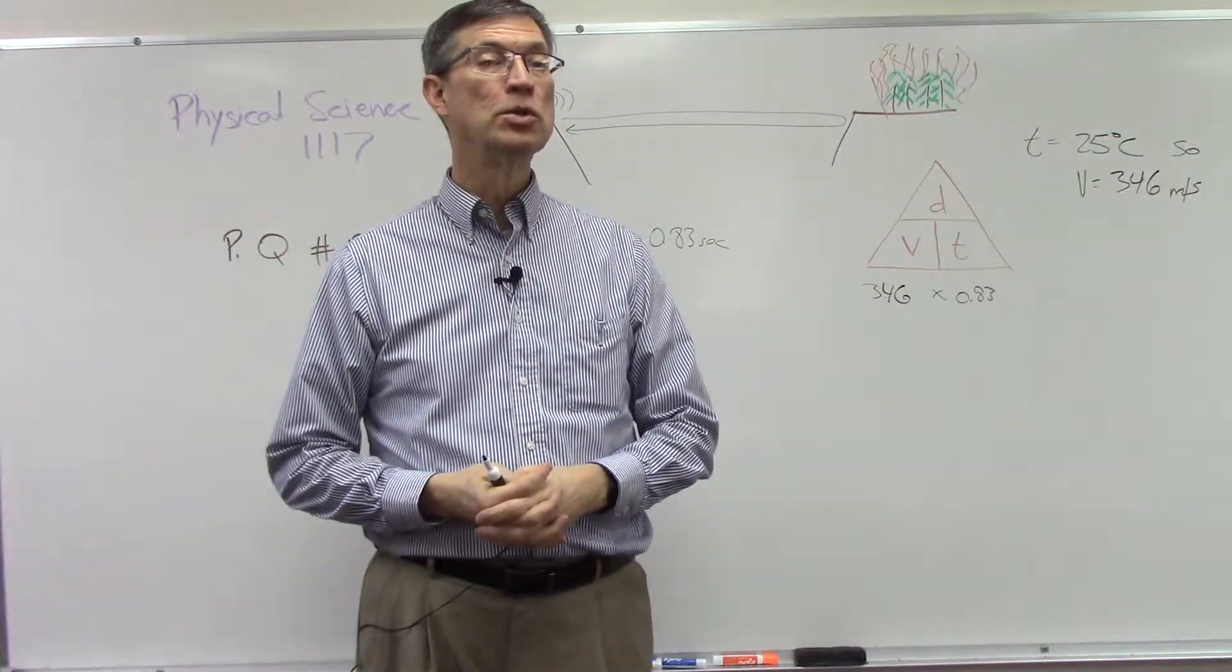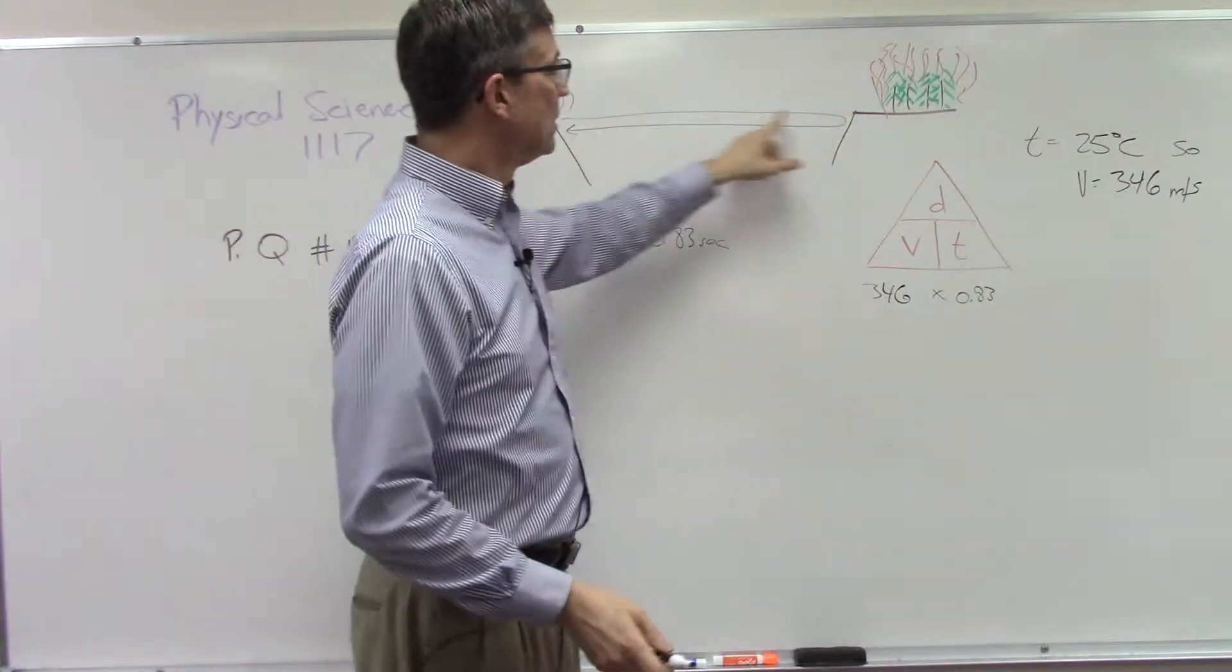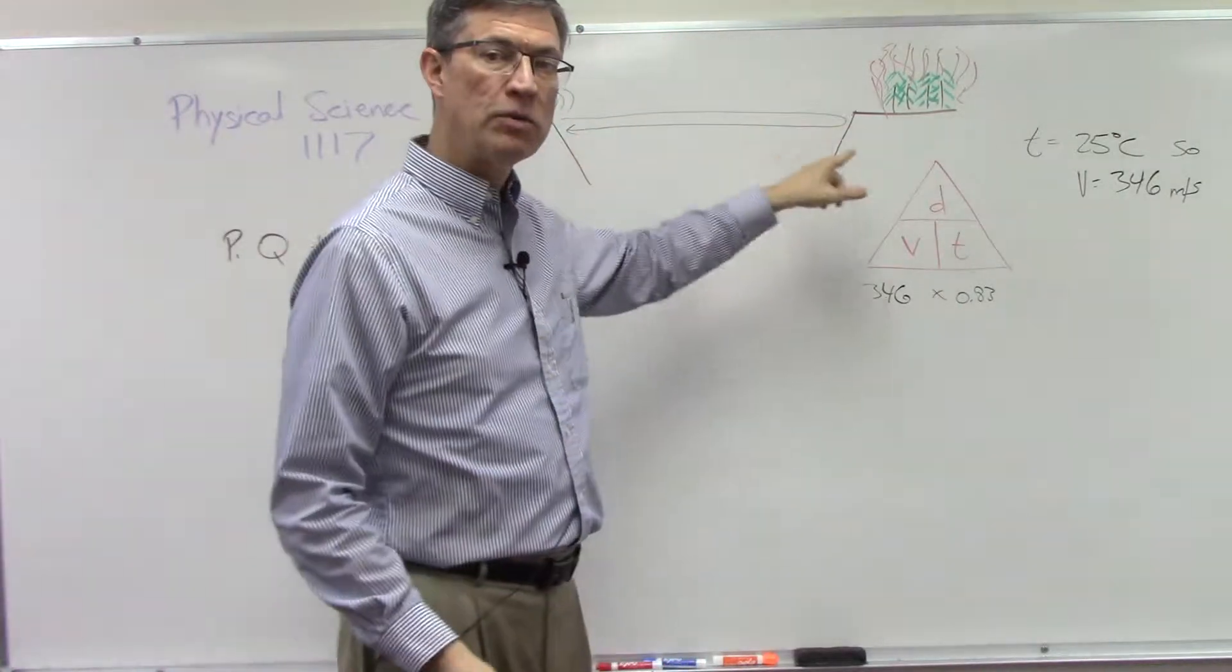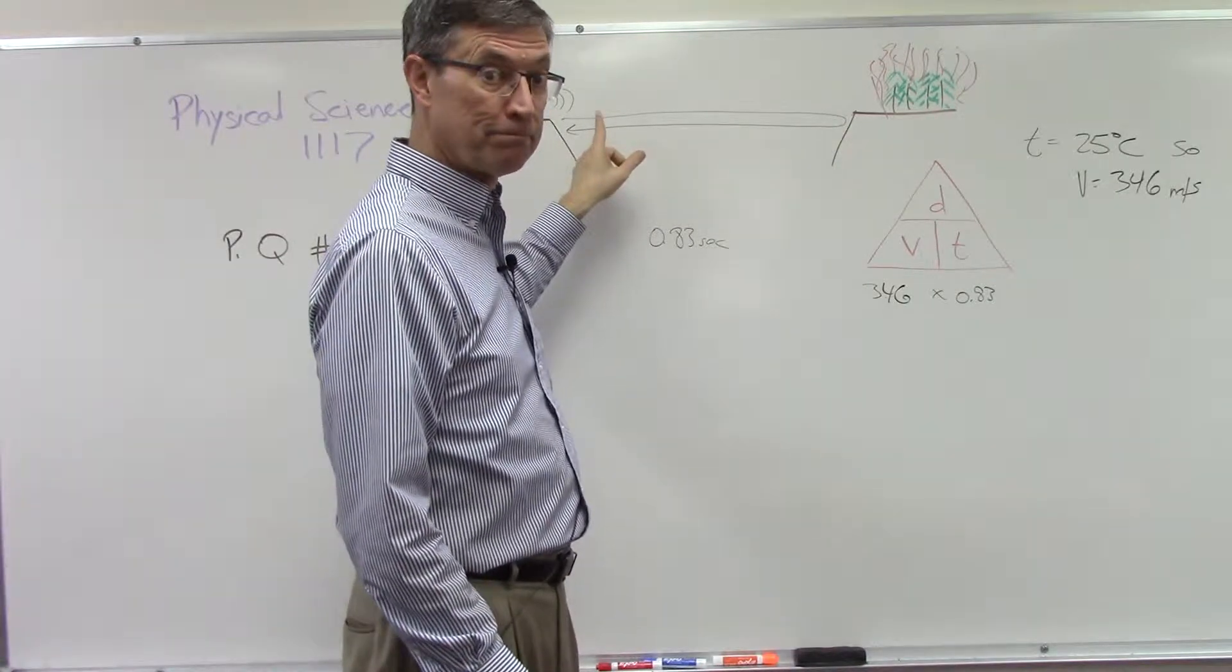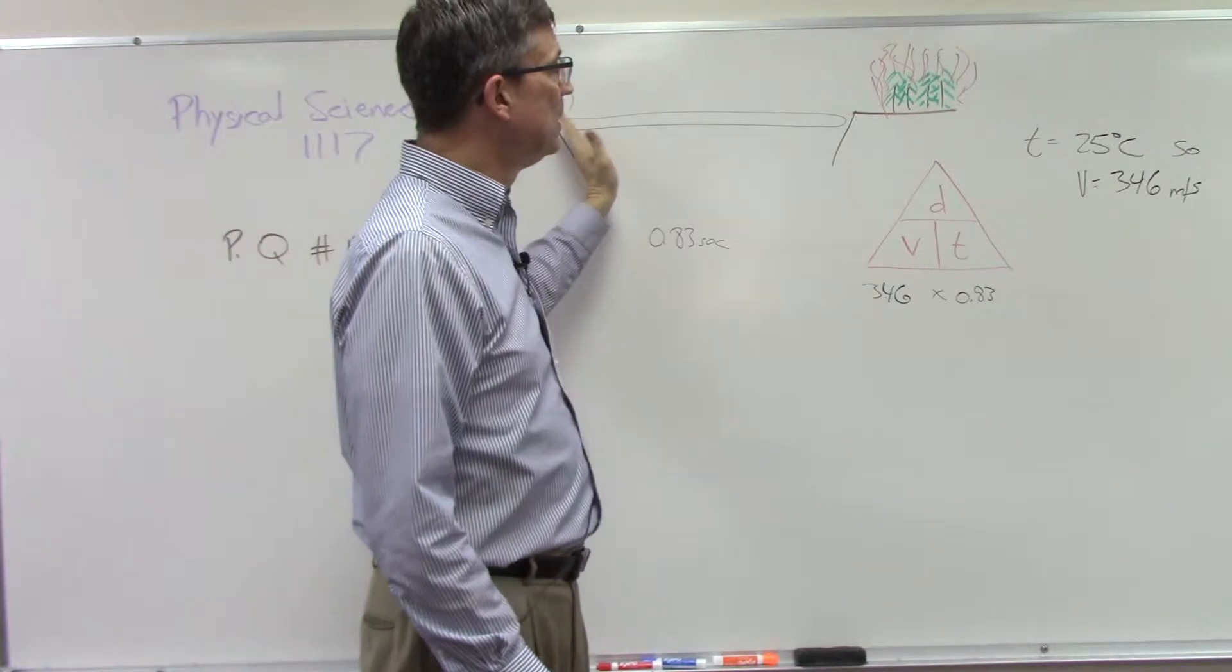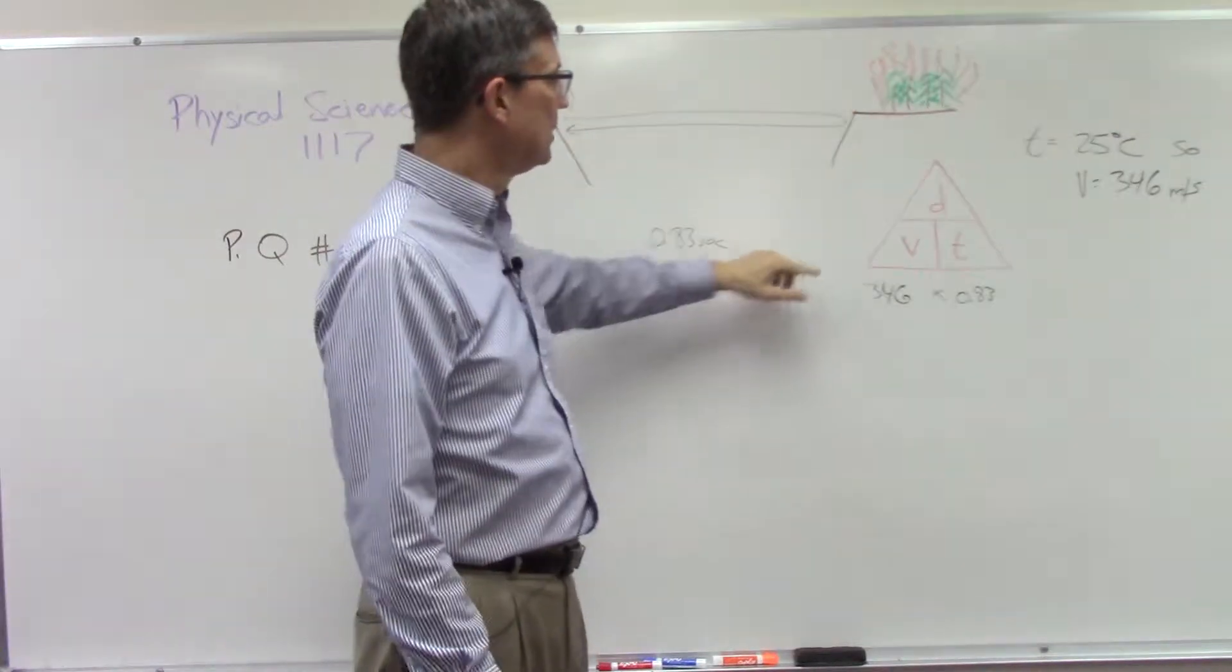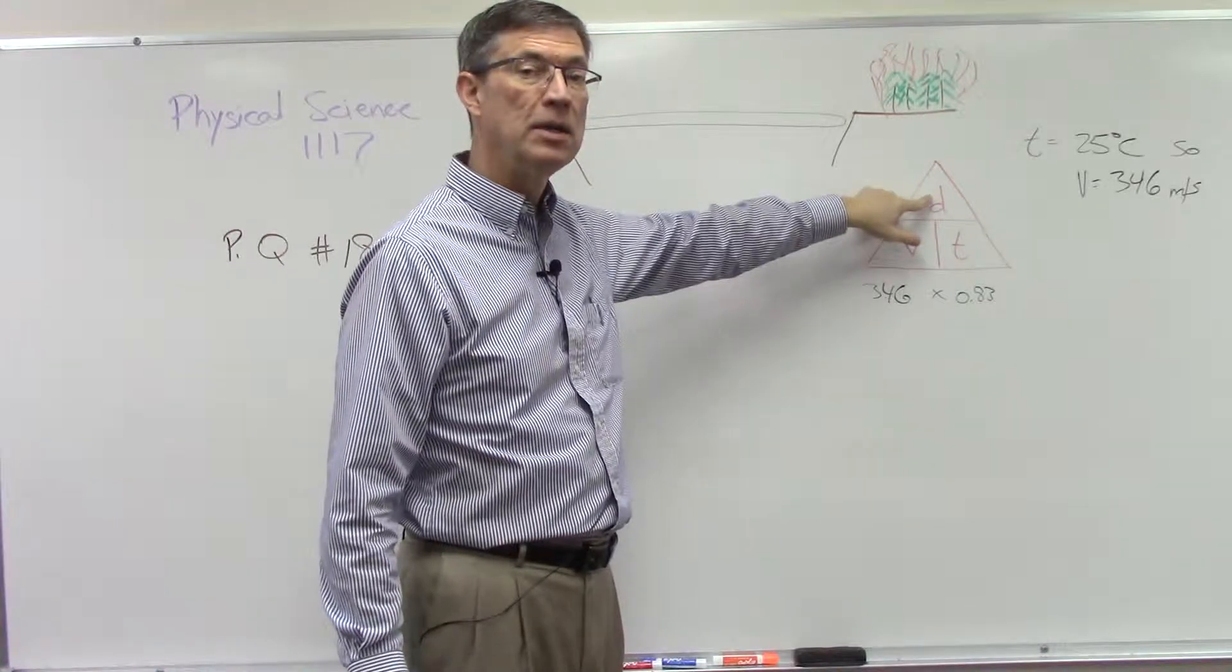That will give you a distance, but I'm not going to finish the problem and let you finish it. But here's where most students make their mistake. The distance for an echo is a round-trip distance, you got it? So when it asks what is the distance across the canyon, you have to take the distance that you find here and divide by two.